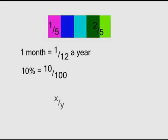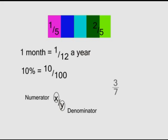In a fraction, the digit above is the numerator and the one below is the denominator. In a fraction, the line can be horizontal or slightly slanted, but it means the same thing.